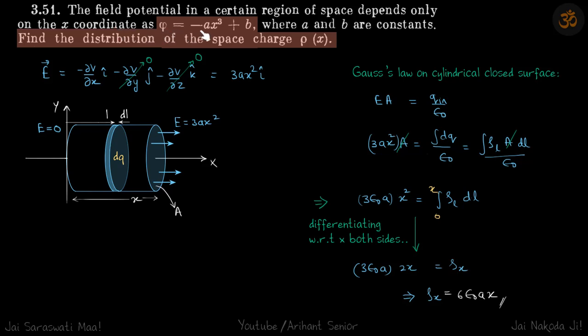We are given potential in a region which varies as minus ax³ plus b. We need to find the space charge distribution in the form of charge density, so how many coulombs per meter³ of space charge if it generates a potential of this form.